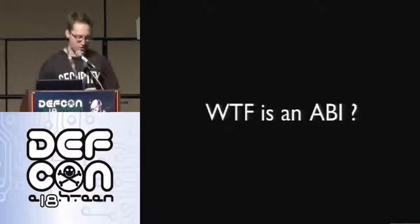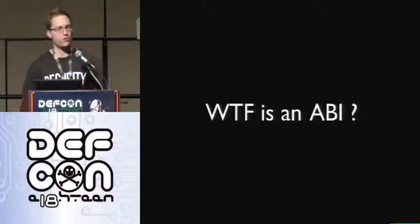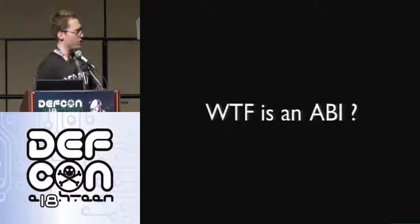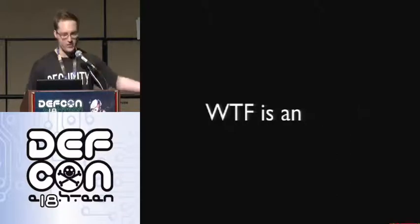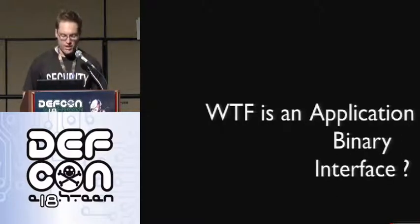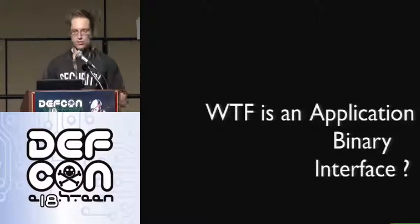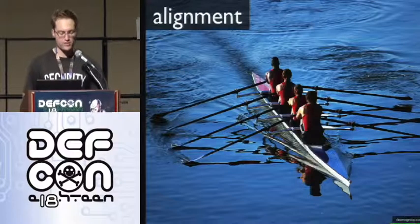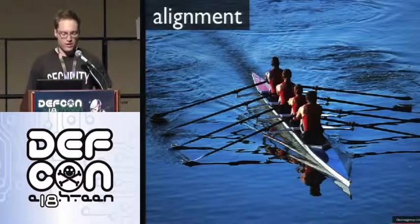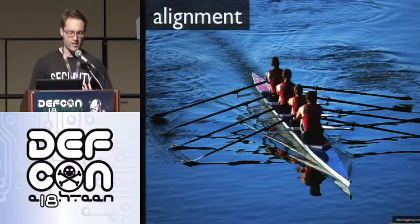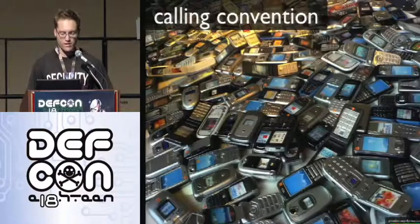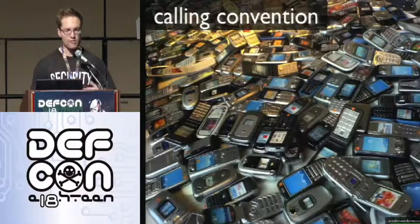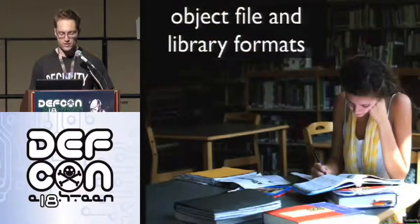To actually do this we need to know a few things. We need to know about the ABI for the system we're working on. What the fuck's an ABI? An ABI is an application binary interface. It tells us a few things: alignment of the program stack, data types, calling convention — how functions are called, where arguments live — and about object file and library formats.